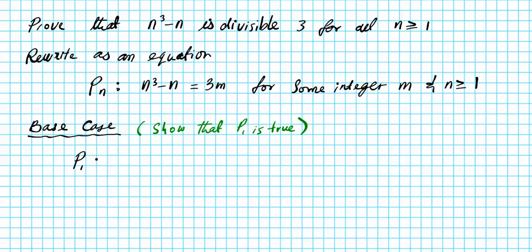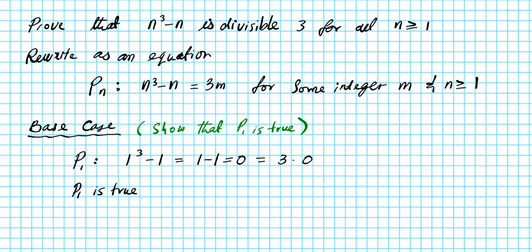P(1) is the statement where one is substituted for n. Starting with the left side, we have one to the third minus one. Simplifying: one minus one equals zero. Zero can be written as three times zero, since three goes into zero zero times. This means that P(1) is true, because one to the third minus one, which reduces to zero, is divisible by three.